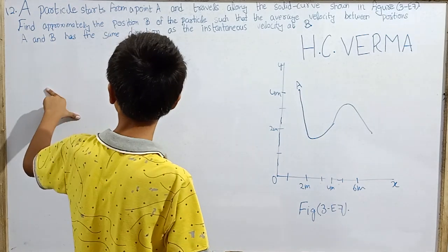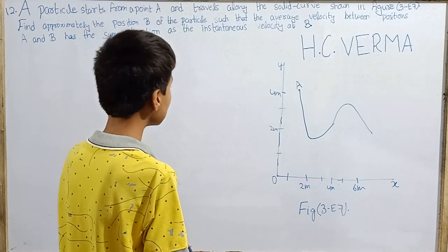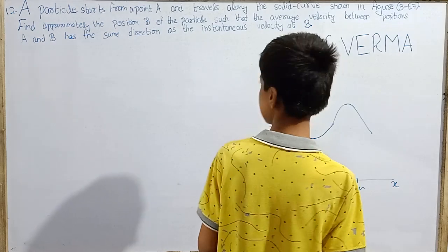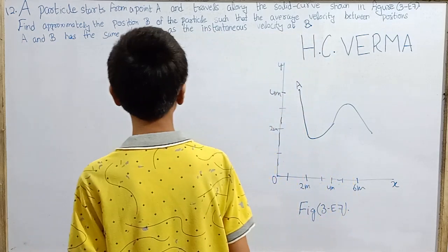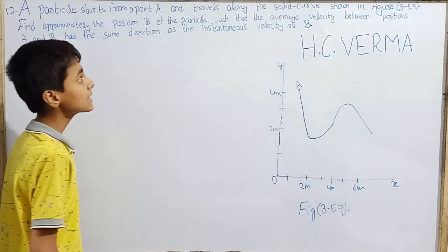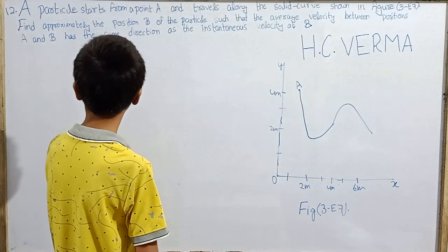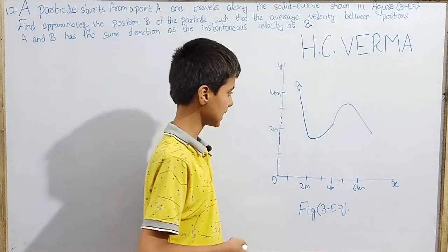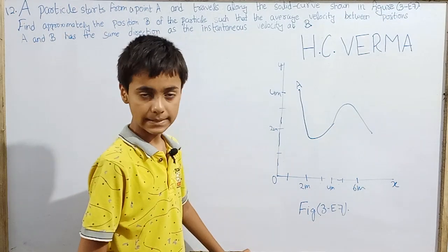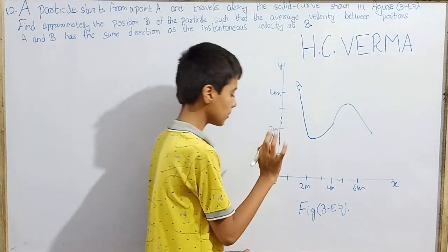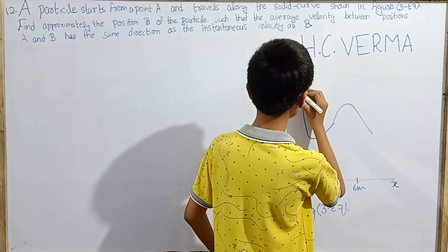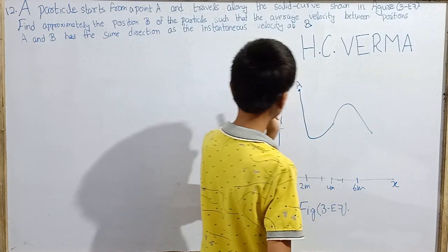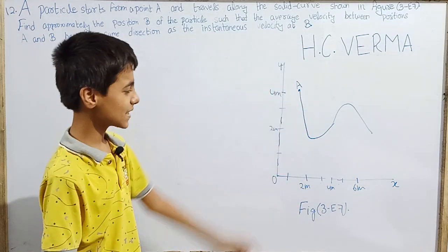Today's question is that a particle starts from point A and travels along the solid curve shown in figure 3E75. Approximately find the position B of the particle such that the average velocity between positions A and B has the same direction as the instantaneous velocity at point B. This is an X vs Y or Y vs X graph.